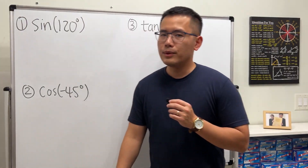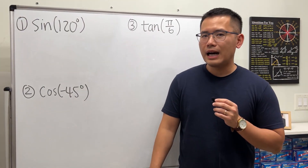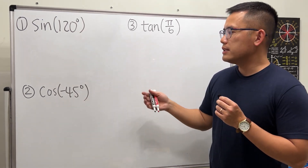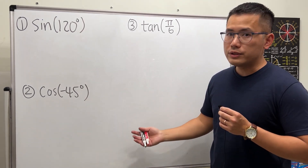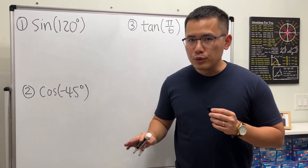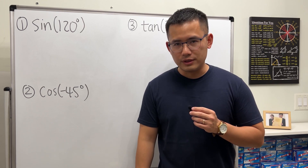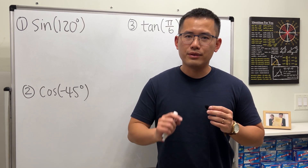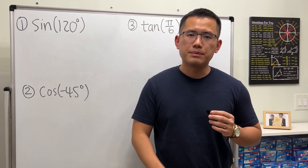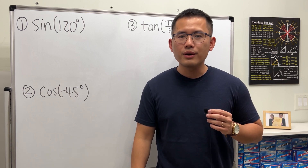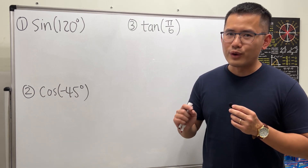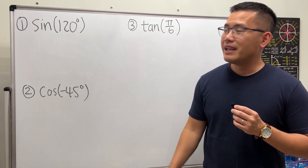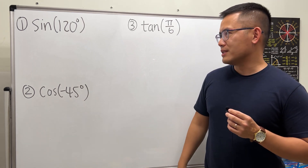In this tutorial I'm going to show you how to evaluate trig expressions at different angles without using a calculator and without using a unit circle. You do have to know the 30-60-90 special right triangle and the 45-45-90 special right triangle. With that in mind, let's get started.